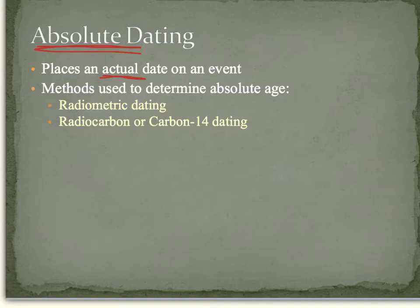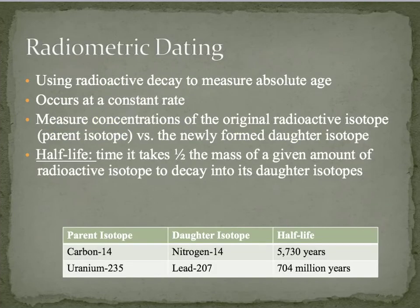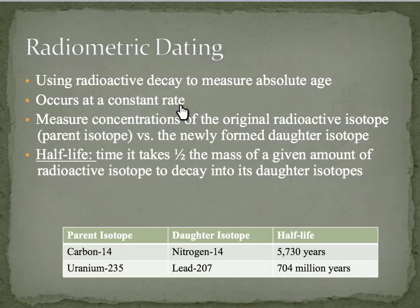There are a couple different methods we use to determine absolute age. This includes radiometric dating, also known as radiocarbon or carbon-14 dating. Radiometric dating uses radioactive decay to measure an absolute age. Things decay radioactively at a constant rate, which allows us to measure the concentrations of the original radioactive isotope versus how much of the newly formed, decayed isotope we have.